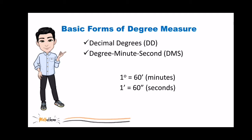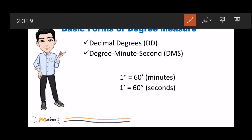The first is called decimal degrees. Halimbawa, 30.57 degrees.